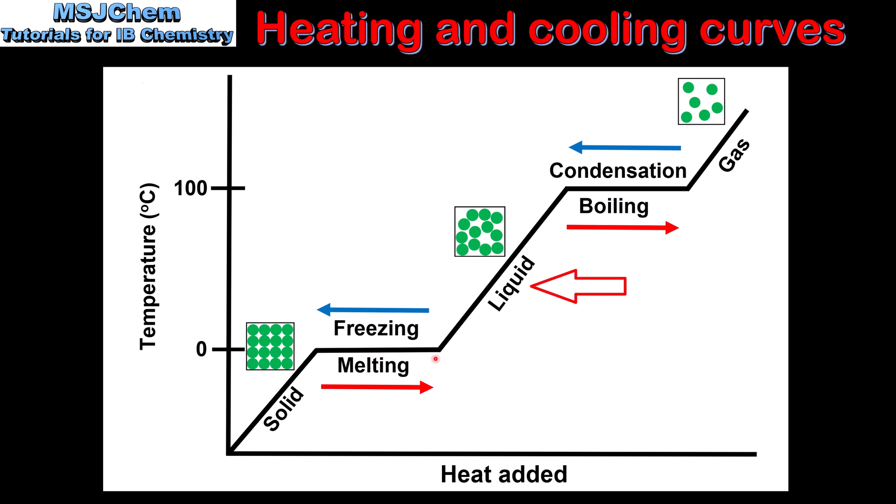Once the ice has become liquid water, we then see the temperature start to increase once more until we reach a temperature of 100 degrees C, which is when the water begins to boil. As we can see, once the water begins to boil the temperature remains constant. The reason for this is that the added heat energy is being used to overcome the intermolecular forces between the water molecules instead of increasing the kinetic energy of the particles.